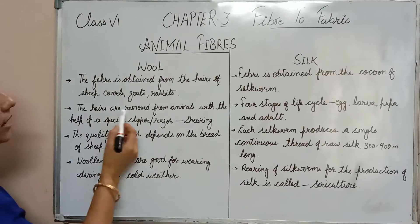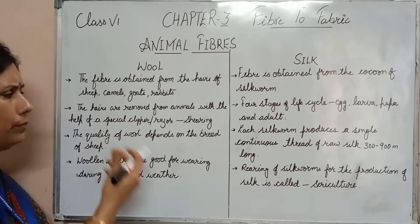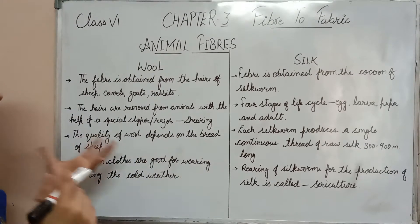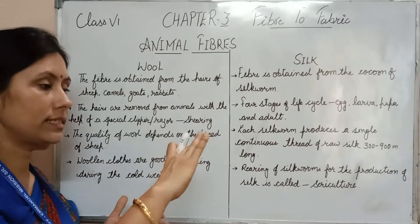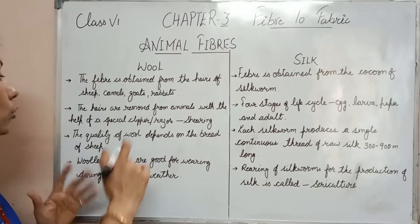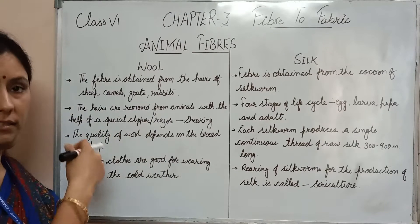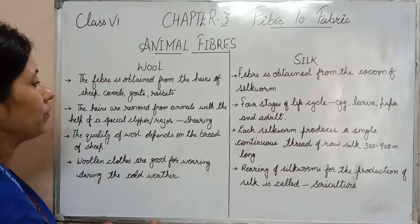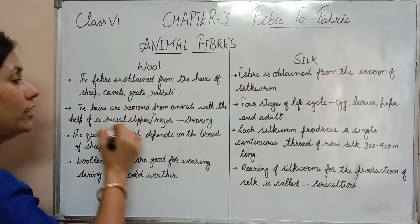The hairs are removed from animals with the help of a special clipper or a big razor. The animal's fleece — the skin layer — is removed from the skin. This is a special device; basically, a special clipper is like a very big razor. The hair is removed through this process.